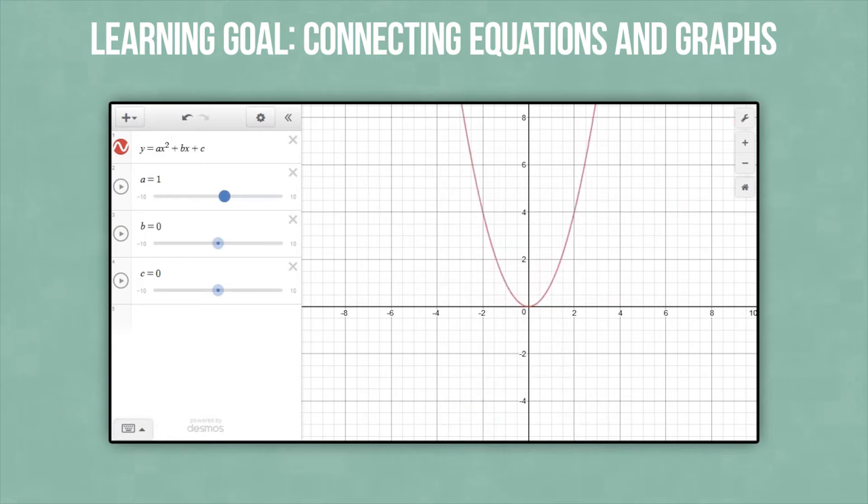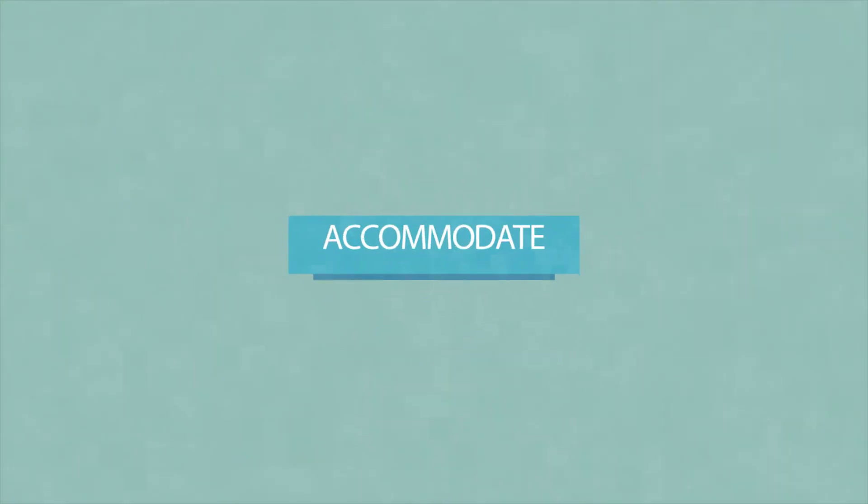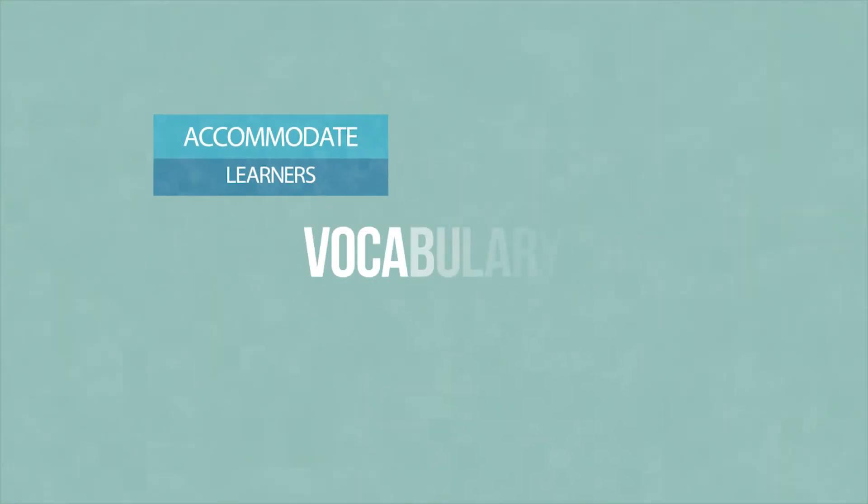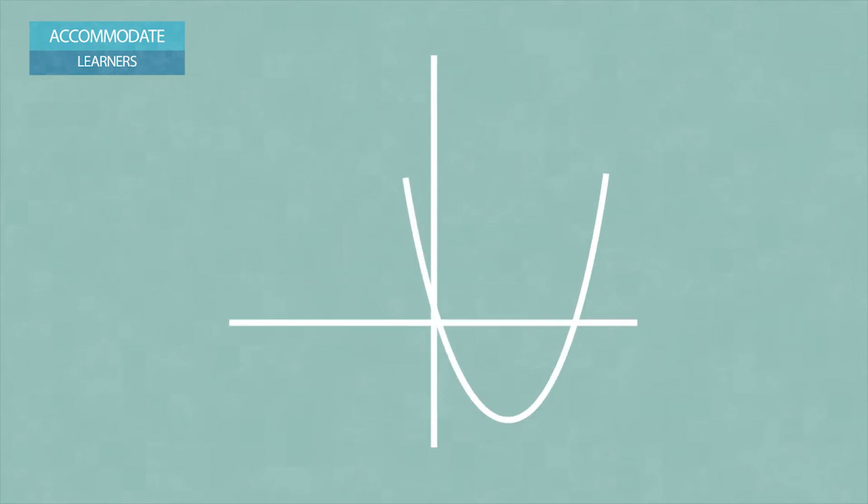And as they're tinkering, they are thinking about how the equation relates to its parabola, and they can uncover the relationship between the equation and the graph. As the students are talking quadratics, you can look for opportunities to accommodate learners through rich vocabulary development. Rather than front-loading vocabulary at the beginning of the lesson, a better way is to build on student talk that comes out as they're working.